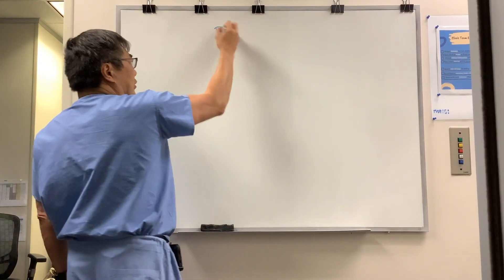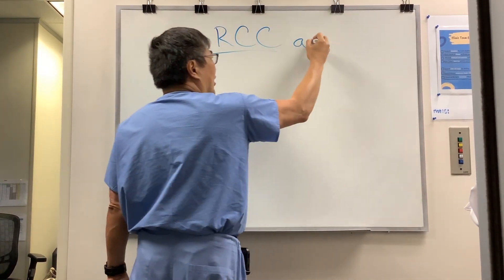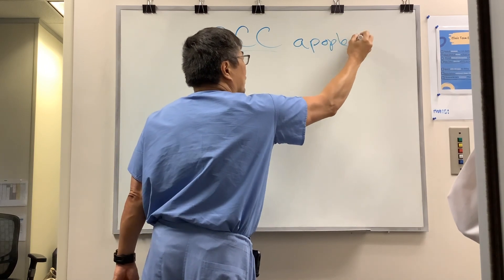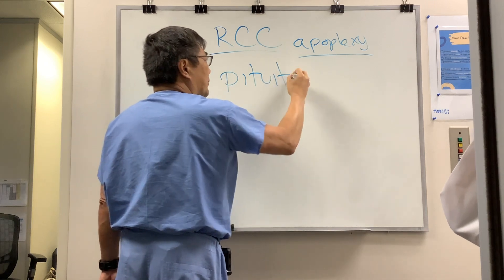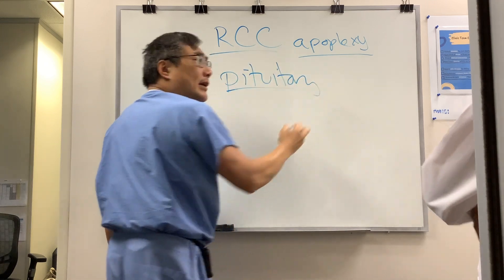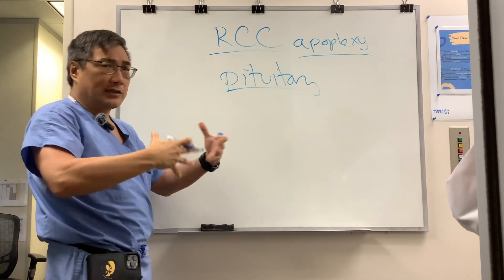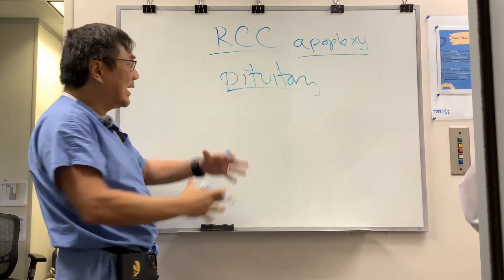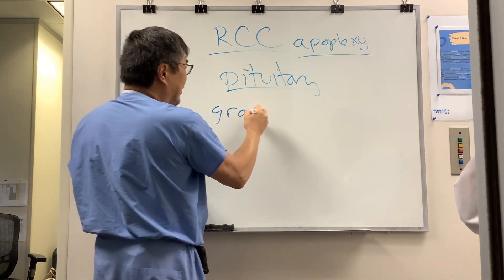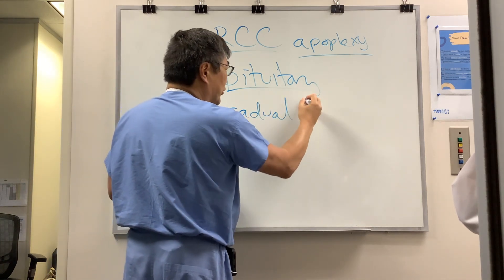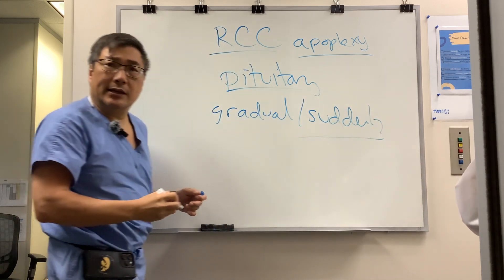Someone wanted to know if Rathke's cleft cyst can cause apoplexy. It's a really interesting question because everybody is familiar with the term pituitary apoplexy, which is a preexisting pituitary adenoma that hemorrhages or has necrosis or outstrips its blood supply and then suddenly presents. This is a very common scenario in specific tumors where things occur gradually and then suddenly.